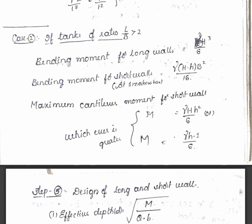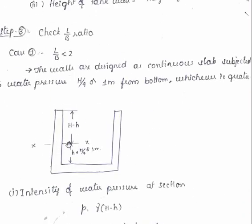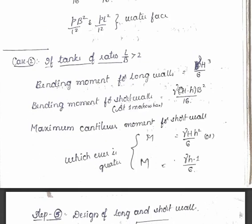That is 10 kN per meter cube, H is the height of the wall, overall height of the tank. Bending moment for the short wall at 1 meter above the base, I mean here, at this point.